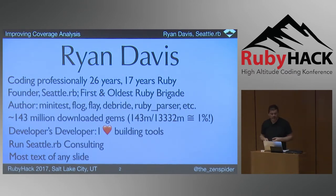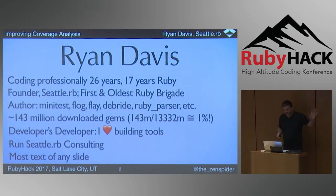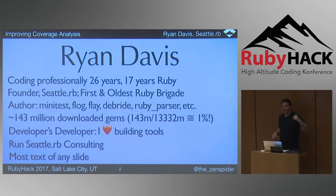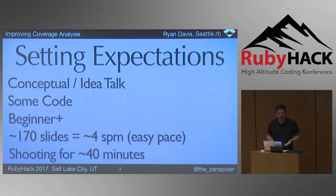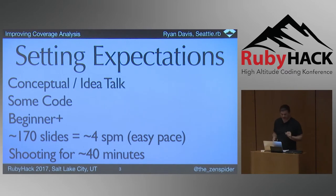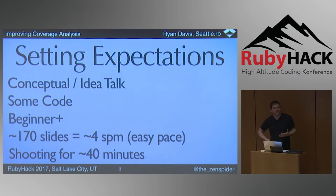I run Seattle RB Consulting. I gave this talk in November, six months ago, and in that time there have been 3 billion more downloads of gems in Ruby. Setting expectations: this is a conceptual talk, there is some code, it is mostly fake, and this is meant for beginners on up. This is about 177 slides, about four slides a minute, and I'm shooting for about 40 minutes.